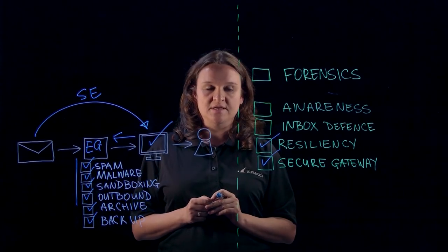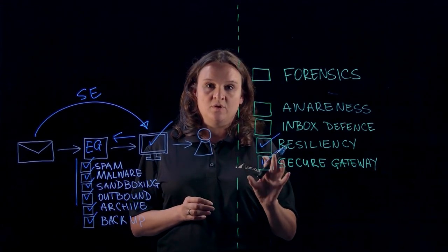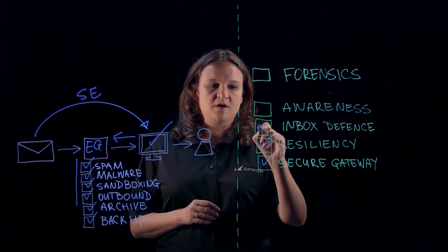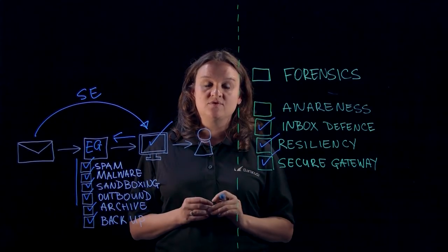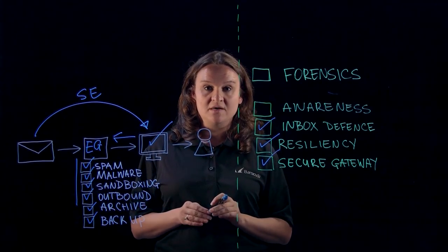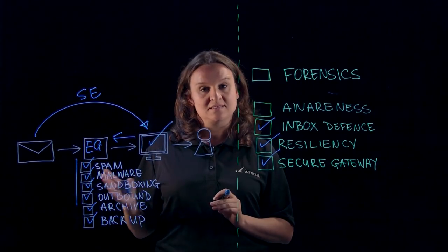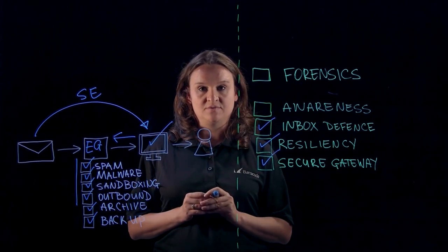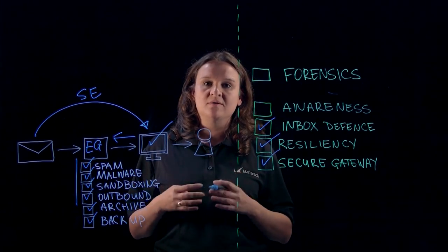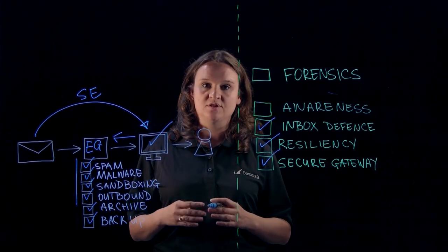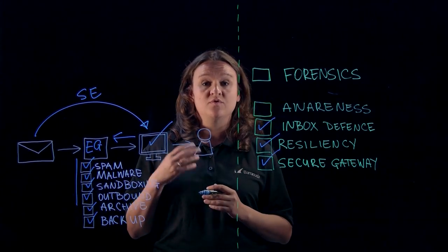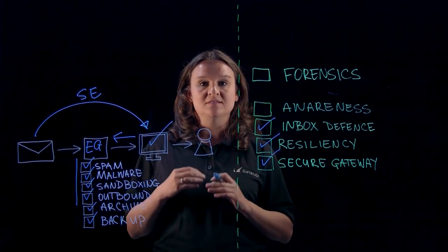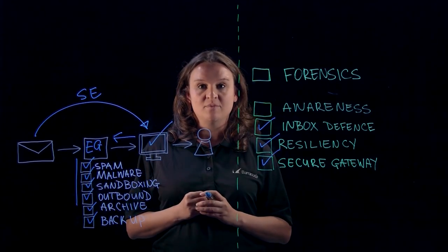But what about all those spear phishing attacks? You need to look beyond securing your gateway — you need to secure your inbox through inbox defense. You need a technology that integrates directly with your inbox and is able to see not only email as it's coming in, but also has visibility into historical and internal communication. So it's able to build a sense of what your normal communication looks like within your organization, and if any anomalous activity or an anomalous email occurs, you can detect and analyze it for malicious intent.